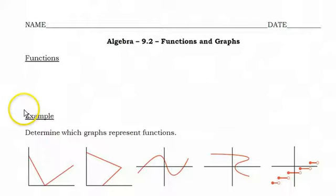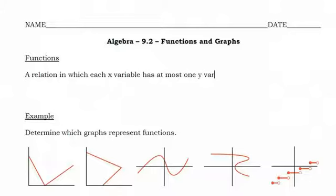We've already discussed a definition of function in terms of inputs and outputs. We're going to extend that definition to talk about functions in terms of x variables and y variables. So a function is a relation in which each x variable has at most one y variable.